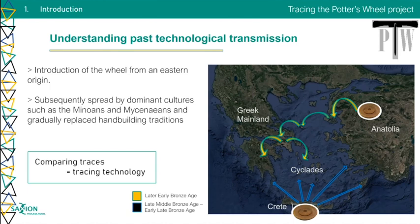This gave way to a PhD position in the project Tracing the Potter's Wheel, which investigates Asian technological trajectories by taking the introduction of the innovative technology, the Potter's Wheel, as a kind of prism to investigate these trajectories — to explain not only the traveling technologies, but especially the people behind it and the contacts between communities through time and space.